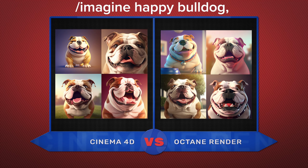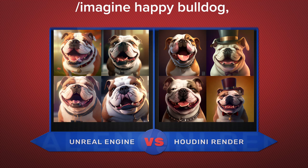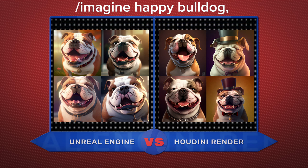All you need to do is type in forward slash imagine, happy bulldog, comma, and then type in what's underneath there. That's it. Six styles in 30 seconds. Thanks for watching.